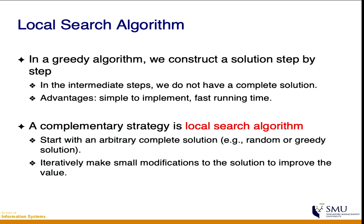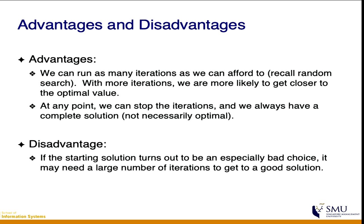You could get the starting solution from an existing algorithm like greedy — greedy one or greedy two — and then we go through iterations to make small modifications to see whether we can improve it. There are pros and cons to doing this.